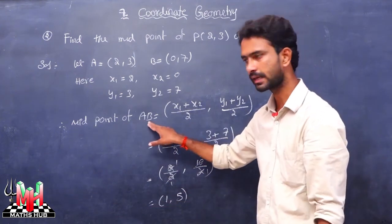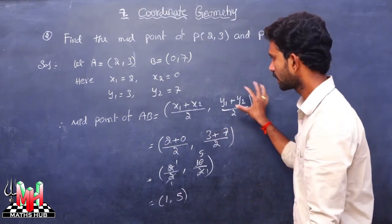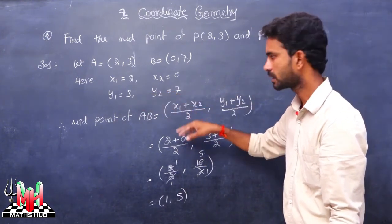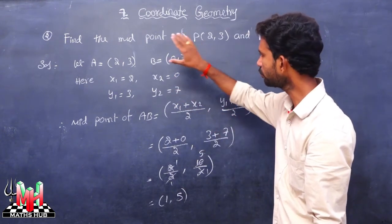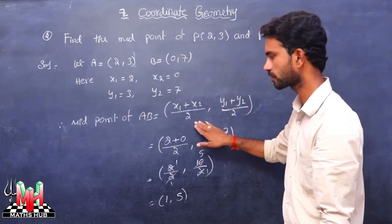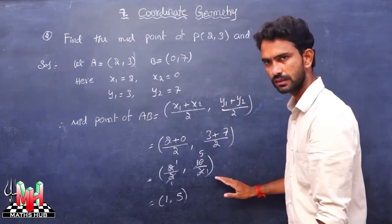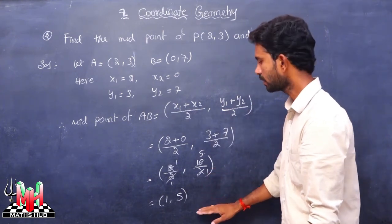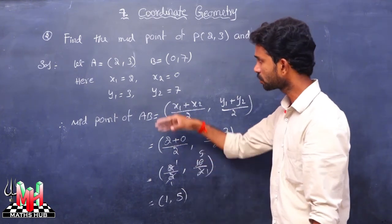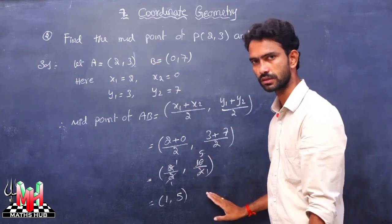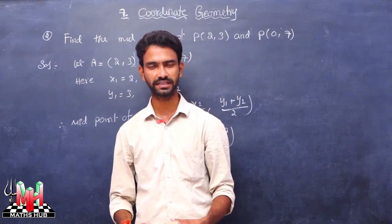So the midpoint of AB using the formula x1 plus x2 by 2 comma y1 plus y2 by 2, we get the answer. This is a half mark or one mark model, but it is one of the most important models. Please like, share and subscribe. Thank you so much.